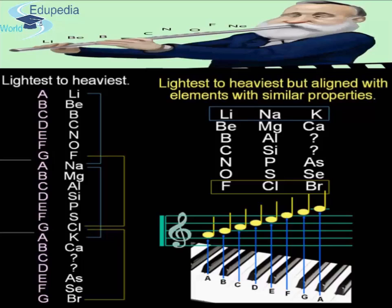Let's take another example of fluorine, chlorine, and bromine. If we take fluorine (F) as the first element, then the eighth element from it will be chlorine (Cl). According to Newlands, both will have similar chemical properties. Similarly, with chlorine and bromine as the first and eighth elements, they also share similar chemical properties.